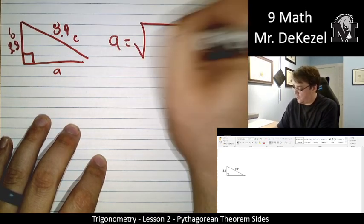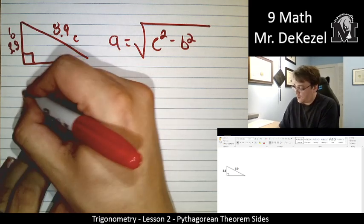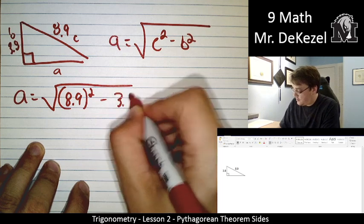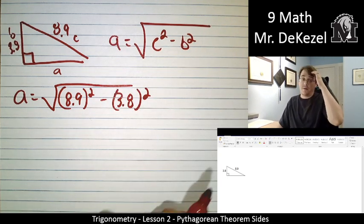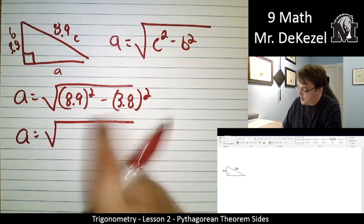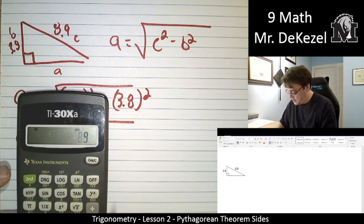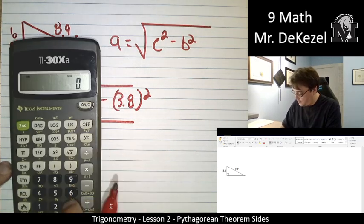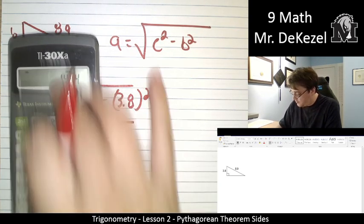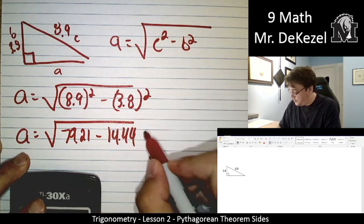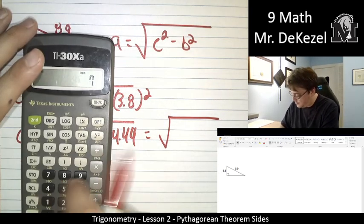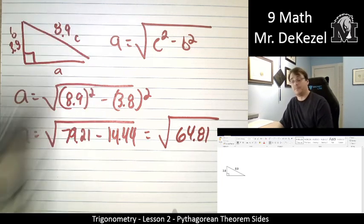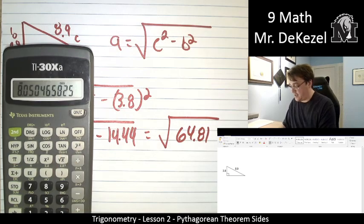So A equals the root of C squared minus B squared. A equals the root of 8.9. It's always the longest one that's C squared, the biggest one. Subtract 3.8. So if you do this part and you get a negative number, you've done something wrong. I want to make sure that the larger number goes first in these cases. So 8.9 times 8.9, 79.21. Subtract 3.8 squared. 14.44. We're going to go ahead and do that. 79.21 subtract 14.44. That's 64.81. And A is, we're going to take the square root of that. That's 8.05.